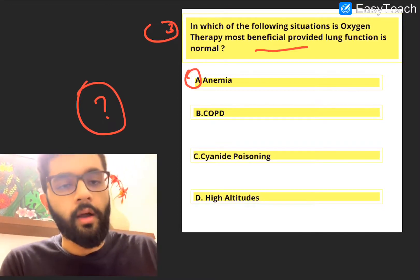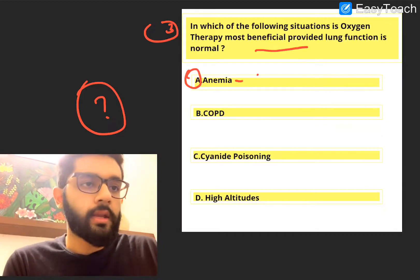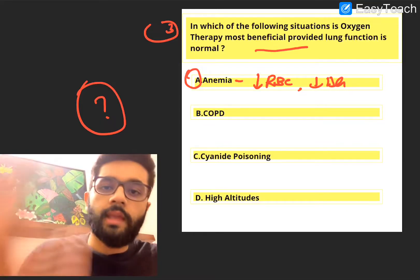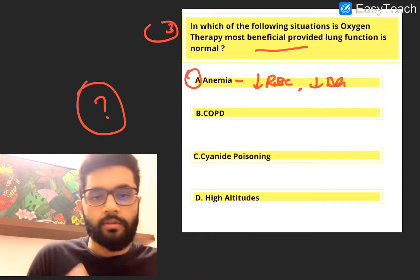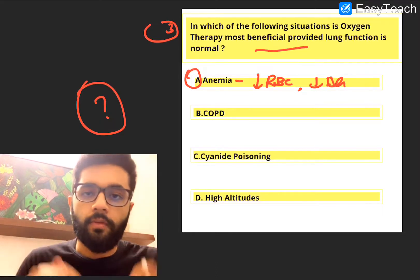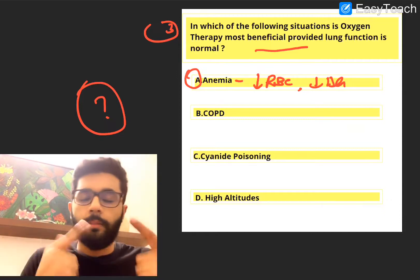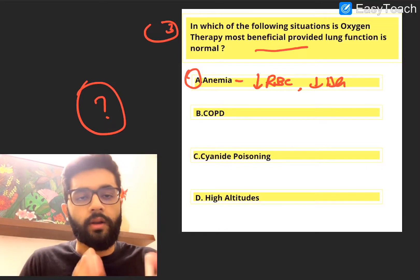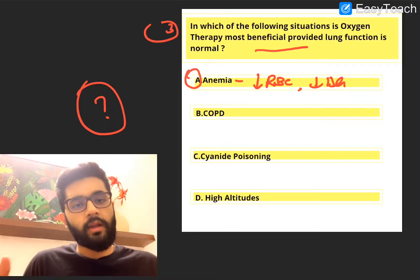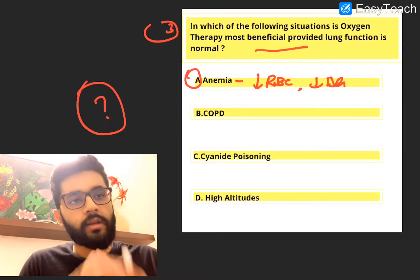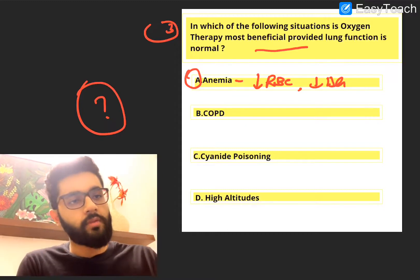Option A is anemia. In anemia, we have reduced RBCs or reduced hemoglobin. The definition of anemia is that the oxygen carrying capacity of the blood is less. So irrespective of how much oxygen we give — even 100% oxygen — the patient won't improve significantly because the oxygen carrying capacity of the blood is reduced. It's like having 100 logs but a truck that can only carry 20 — bringing more logs won't help. So anemia is ruled out.